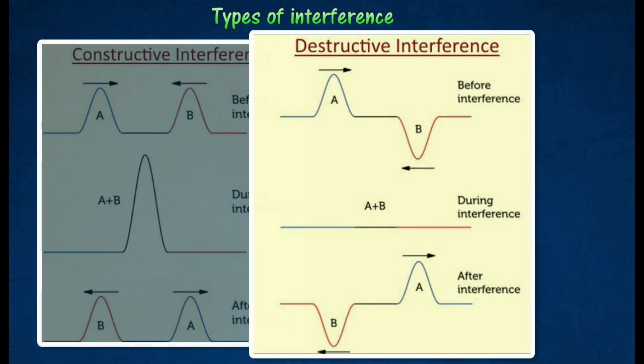Destructive interference occurs when the crests of one wave overlap the troughs, or lowest points, of another wave as shown in the diagram. As the waves pass through each other, the crests and troughs cancel each other out to produce a wave with zero amplitude.